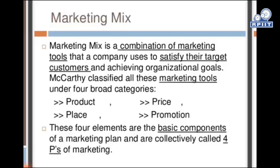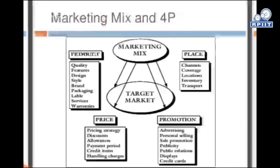McCarthy classified all these marketing tools under four broad categories: Product, Price, Place, and Promotions. These four elements are the basic components of a marketing plan and are collectively called as the four Ps of marketing. Marketing mix and four Ps — marketing mix, target market.